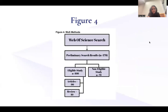This figure outlines our entire research process. From our initial search in Web of Science, we conducted a preliminary search which resulted in 179 articles. From there, we filtered it down to 100 eligible articles for our study and 79 non-eligible articles. From our eligible articles, we have 90 articles and then 10 review articles.